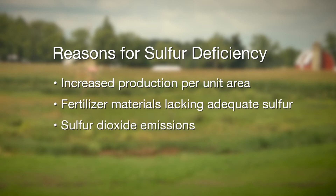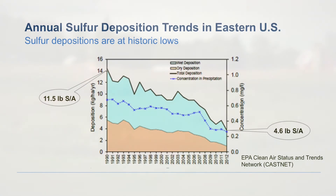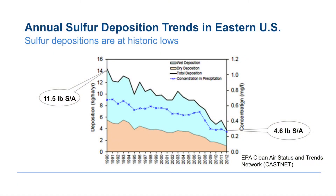And finally, think about sulfur dioxide emissions and how we've cleaned up the atmosphere. That sulfur was available for plant use at some point. That's not the case anymore, so we've cleaned up the atmosphere and we need to make these applications deliberately.